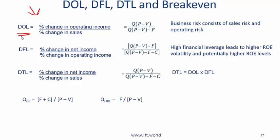Degree of operating leverage is a measure of the percentage change in operating income over percentage change in sales, and this is the formula. Note that in this context with the degree of operating leverage, we are talking about business risk, which includes both sales risk and operating risk.